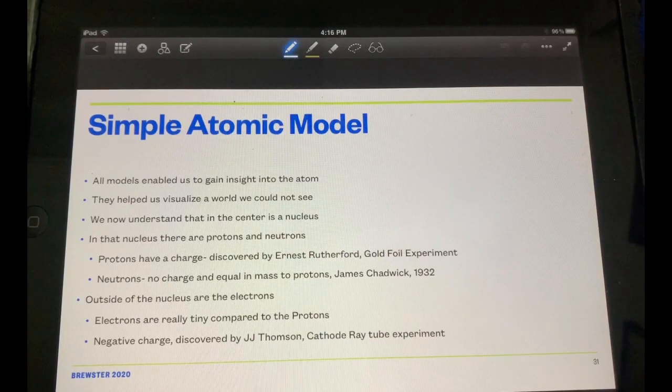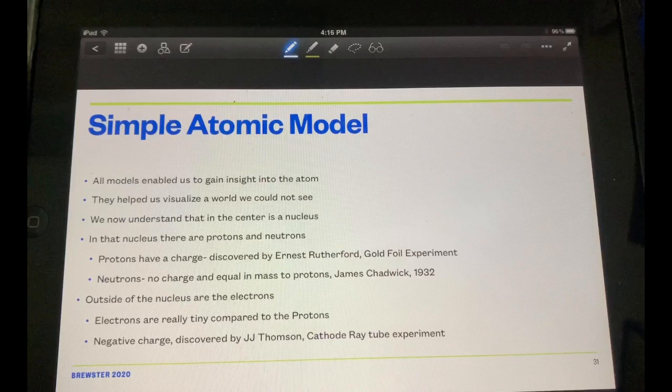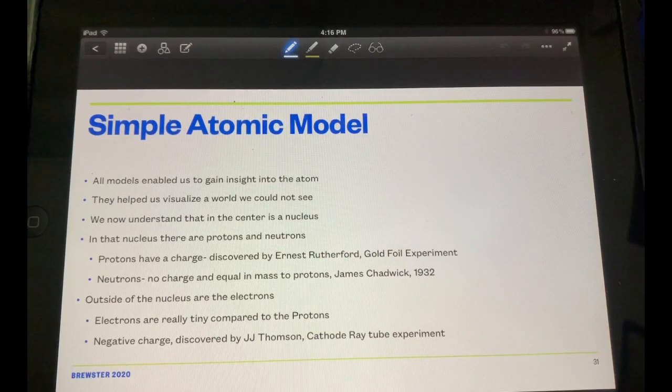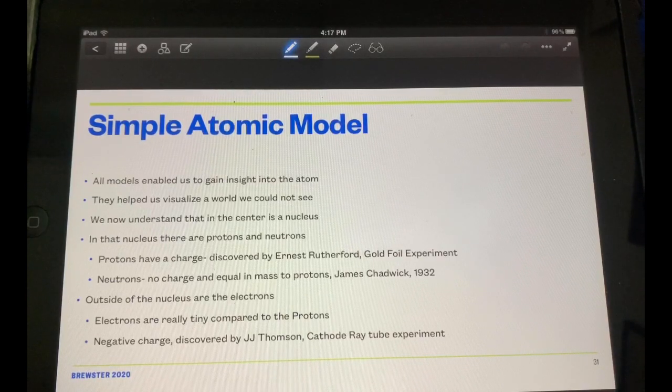Protons have a charge discovered by Ernest Rutherford in the Gold Foil experiment. Neutrons have no charge and are equal mass to protons, discovered by James Chadwick in 1932. He later spends the rest of his life fighting insomnia. He couldn't sleep after that.